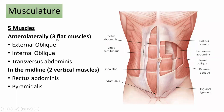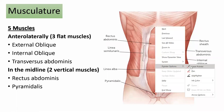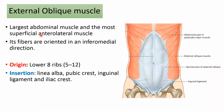The musculature of the anterior abdominal wall is composed of five muscles. Anterolaterally there are three flat muscles: the external oblique, internal oblique, and transversus abdominis. In the midline there are two vertical muscles: the rectus abdominis and the pyramidalis. The external oblique is the largest and most superficial anterolateral muscle; its fibers are oriented in an inferior-medial direction, originating from ribs 5 to 12 and inserting into the linea alba, pubic crest, transversus abdominis, inguinal ligament, and iliac crest.